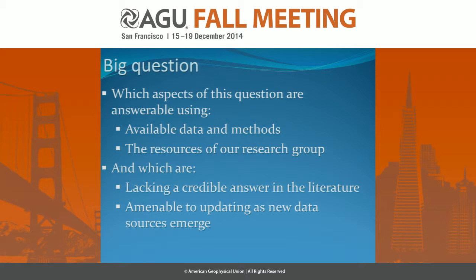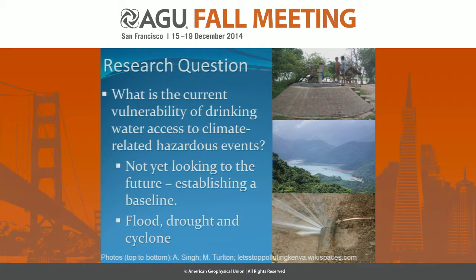I had to narrow down the question, so I started asking which aspects were answerable using available data and methods — the resources of our research group in particular — that lacked a credible answer in the literature and that were amenable to updating as new data emerged. The question we settled on was: what is the current vulnerability of drinking water access to climate-related hazardous events? It's a global analysis establishing a baseline based on recent data. The hazard events we had access to were flood, drought, and cyclone.